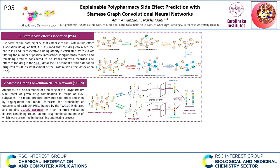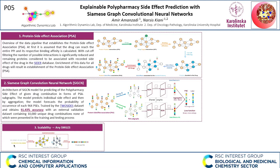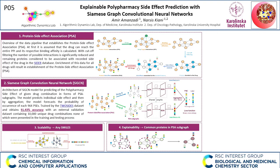The Siamese graph convolutional neural networks predict the individual side effect, and then by mean aggregation, the model predicts the probability of occurrence of each of 964 adverse side effects. The model was trained using the TwoSides dataset and obtains 91.43% accuracy with an external dataset containing 10,000 unique drug combinations. The pipeline is scalable and fully automated; it only requires SMILES of the drugs for prediction. Since the inputs are protein-protein interactions, the predictions can be affiliated to the proteins that may be causing a particular side effect.